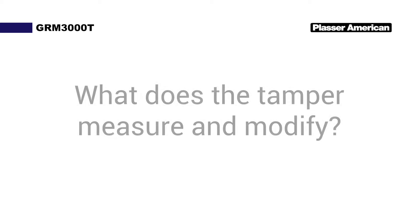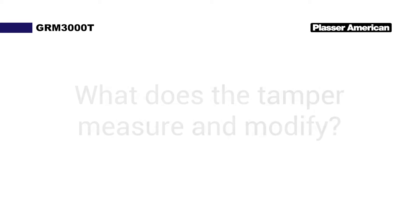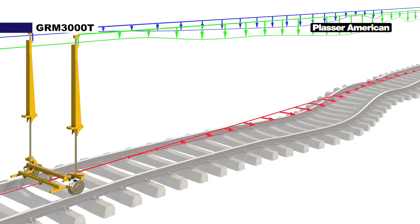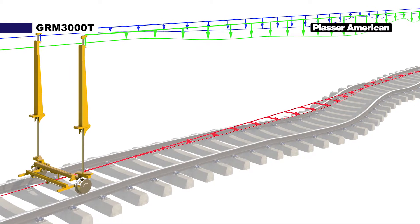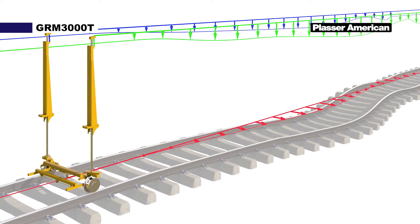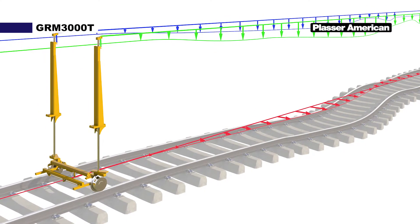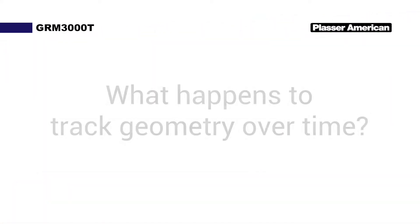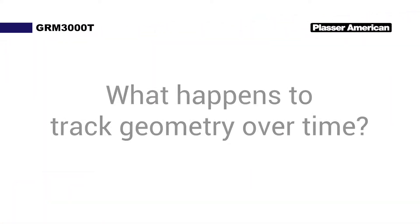What does the tamper measure and modify? The tamper measures the following parameters: horizontal alignment, superelevation, and left and right longitudinal profile.